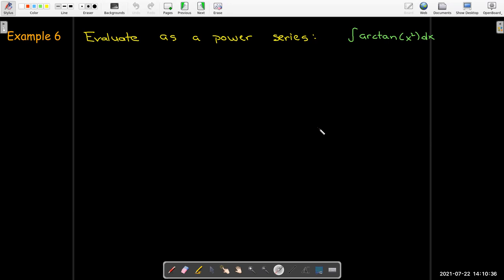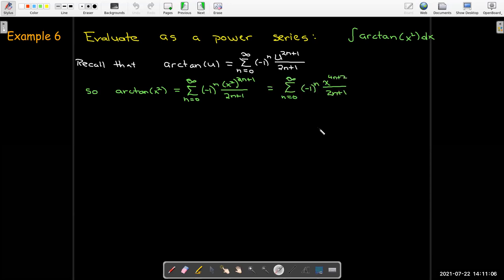We'd like to evaluate this integral, the integral of arctan of x squared as a power series. So previously we found that arctan of u was this power series. There's an alternating series. And we had u to the power of 2n plus 1 over 2n plus 1. So I'll replace u with x squared. Simplify that a little bit. And then all I have to do is integrate that power series term by term. I'll just use the power rule.